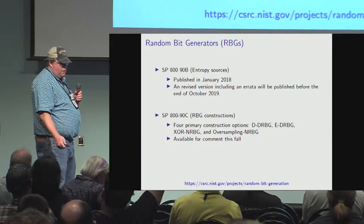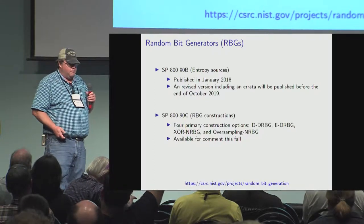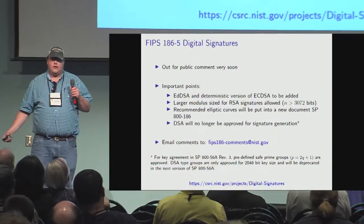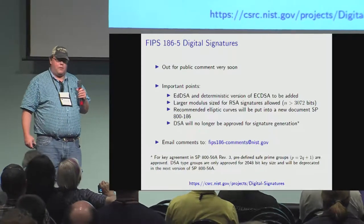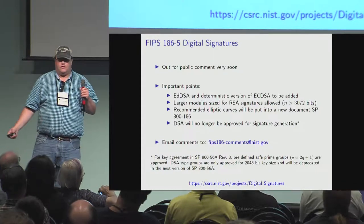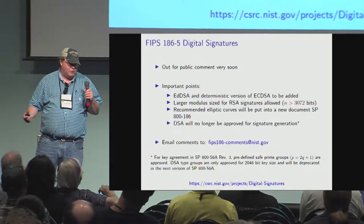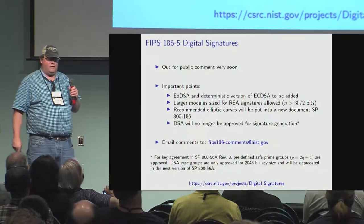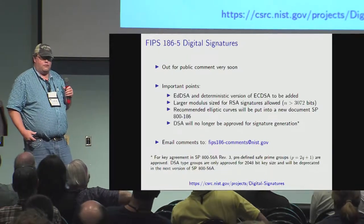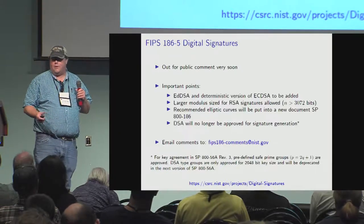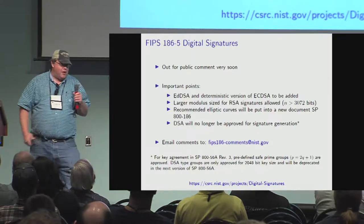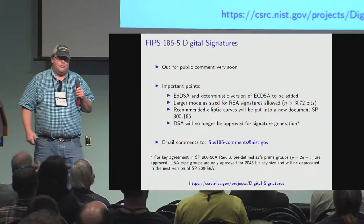The most interesting thing I need to talk about is FIPS 186-5, the Digital Signature Standard, which will be out for public comment very soon. Important things: number one, we're adding support for deterministic EdDSA and deterministic ECDSA. We've also fixed the issue where we weren't allowing large RSA moduli, so if you really want to do post-quantum RSA, that'll now be okay.